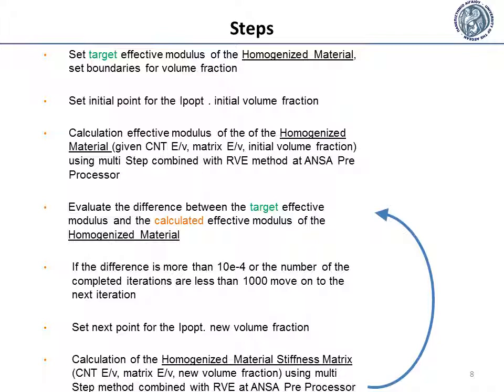The following step is a new iteration of the algorithm. A next point for the IP-Opt algorithm is chosen — the next point is the new value of the carbon nanotube volume fraction. Afterwards, given the carbon nanotube and matrix modulus and Poisson ratio and the new volume fraction, the effective modulus of the homogenized material is calculated using the multi-step method combined with the RVE method at the ANZA preprocessor. The difference is evaluated for the new iteration and the loop keeps on until convergence is achieved.